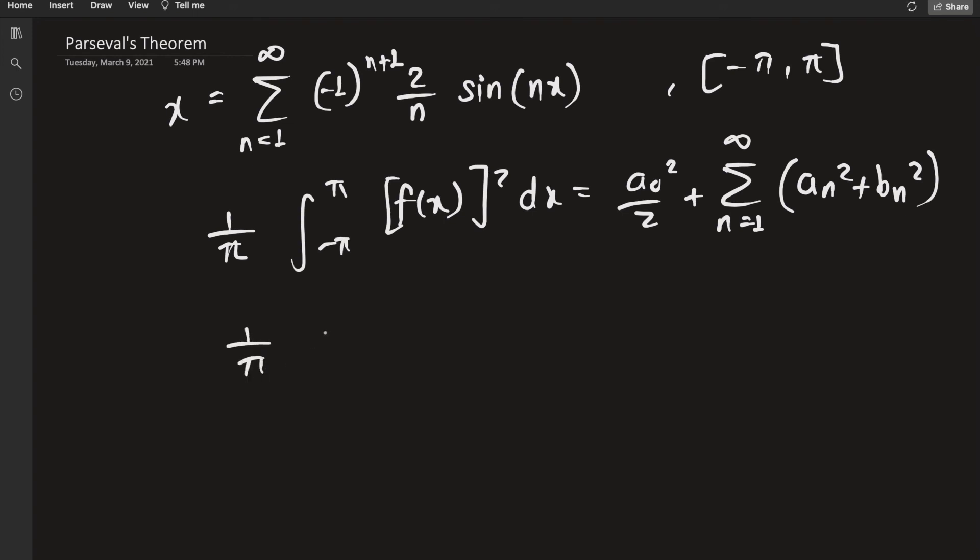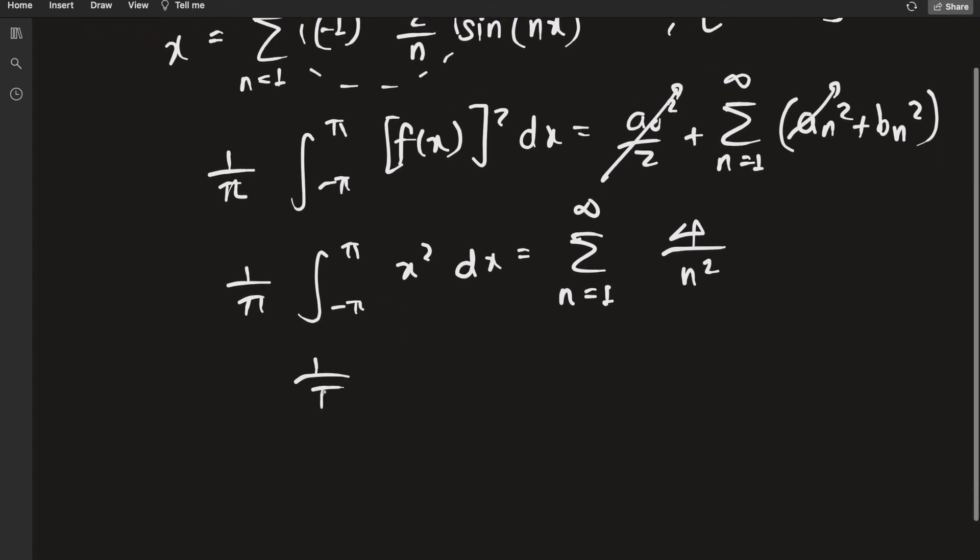Well, f(x) is just x, so plug that in here. a₀ is zero, aₙ is zero, this is sum from n equals 1 to infinity. bₙ is like this guy, so just square that up. The alternating part will go away because you're squaring a negative or a positive, you get 1. Four over n squared. That's it. Just evaluate this integral: 1 over π, x cubed over 3.